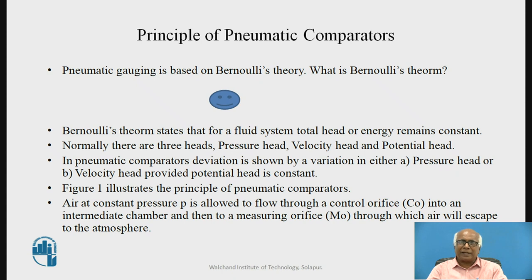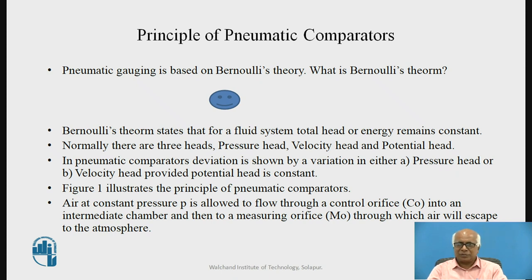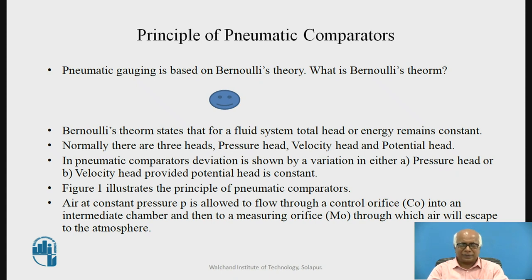In pneumatic comparators, deviation is shown by a variation in either the pressure head or the velocity head, provided the potential head remains constant. So if there is variation in one head, that will vary the other head by an equal amount but in opposite direction. Figure one illustrates the principle of the pneumatic comparator.